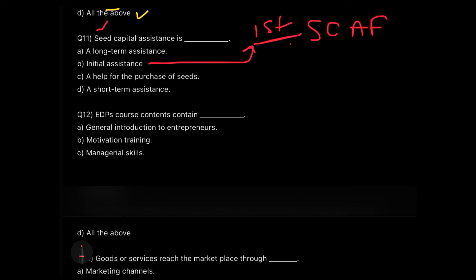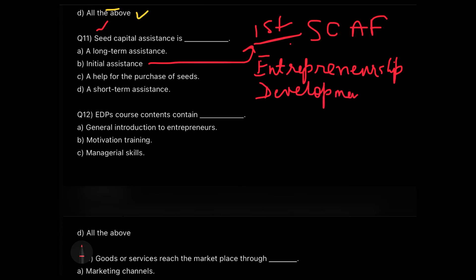Question twelve: EDP's course contents contain what? This is a full form based question. EDP stands for Entrepreneurship Development Program. Once you know the full form, you can guess the answer: it provides a general introduction to entrepreneurs, motivational training — very much needed for entrepreneurs — and managerial skills as well. So the answer is all of them — option D is the correct answer.